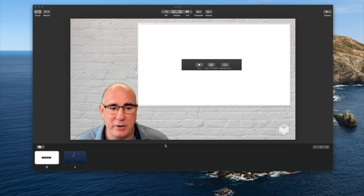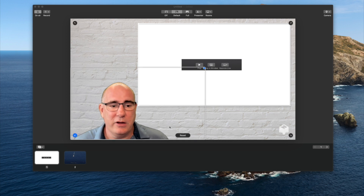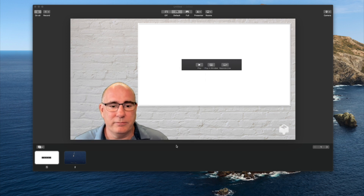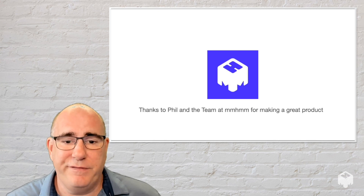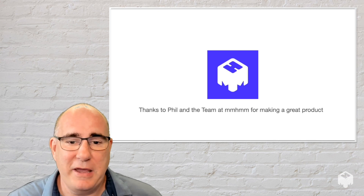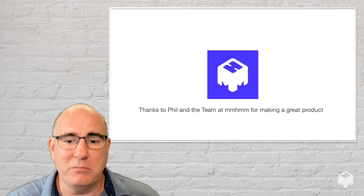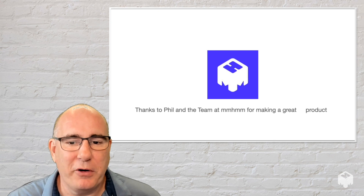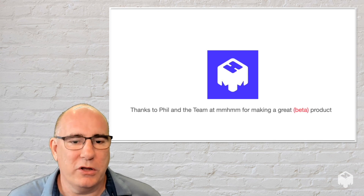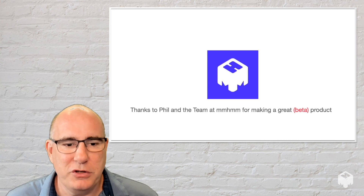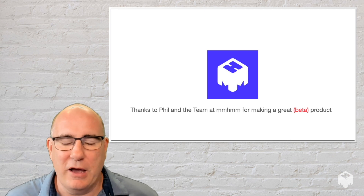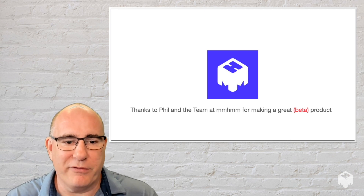As you can see, it's really simple to do. No need to export your presentations, no need to do anything crazy — just bring it into Keynote, run it in a window, and then bring it into mm-hmm. That's it for this short video. A big thanks to Phil and the team for making mm-hmm such a great beta product. If you want to know more, go look them up on the internet and watch Phil's great videos on YouTube.